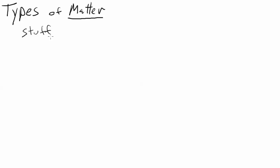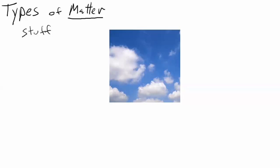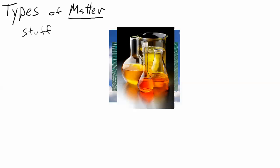For this first online lesson we're going to be talking about types of matter. At this point in your life you're probably all familiar with the science vocabulary word 'matter' - you know that it's basically a synonym for stuff, and that anything around you that you can interact with, feel, or touch is an example of matter. We have things like water, a person, iron, air, glass, gasoline - these are all examples of everyday things around us that are made of matter.